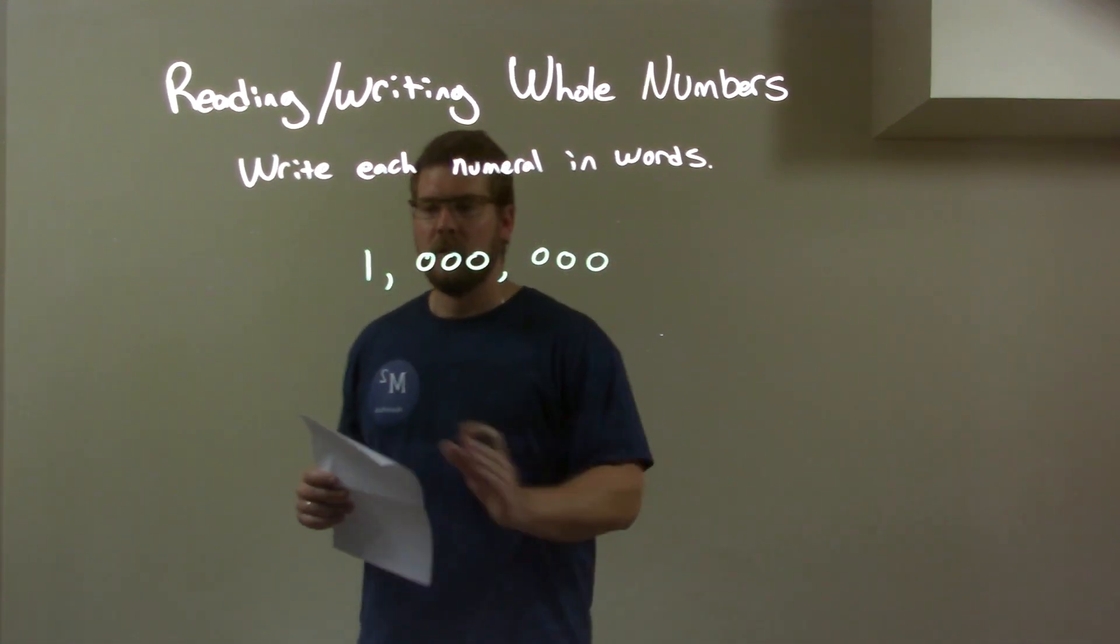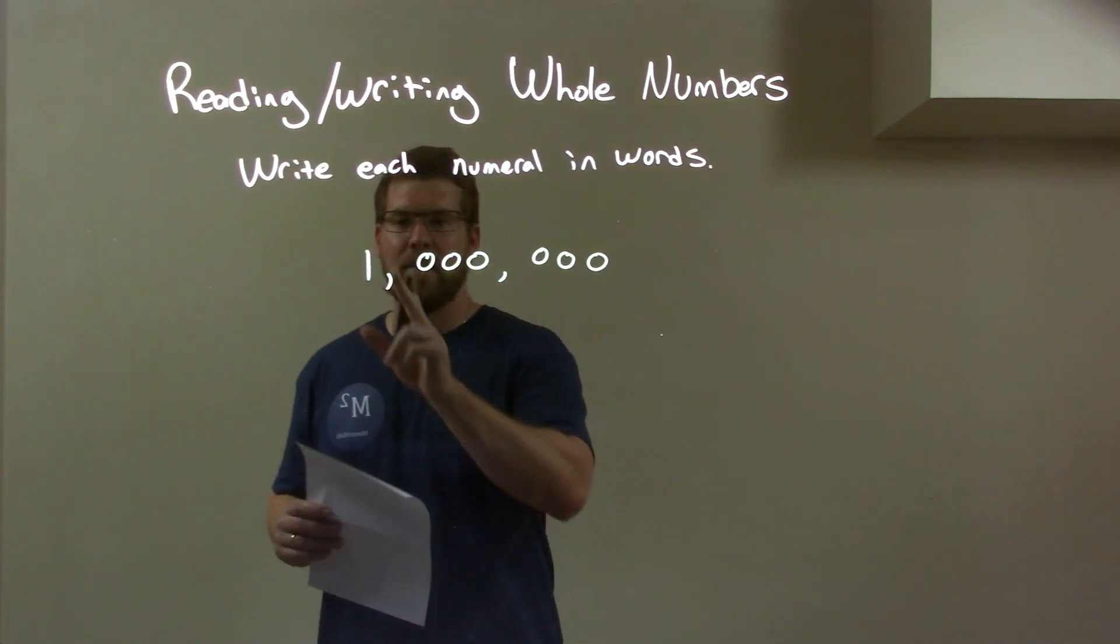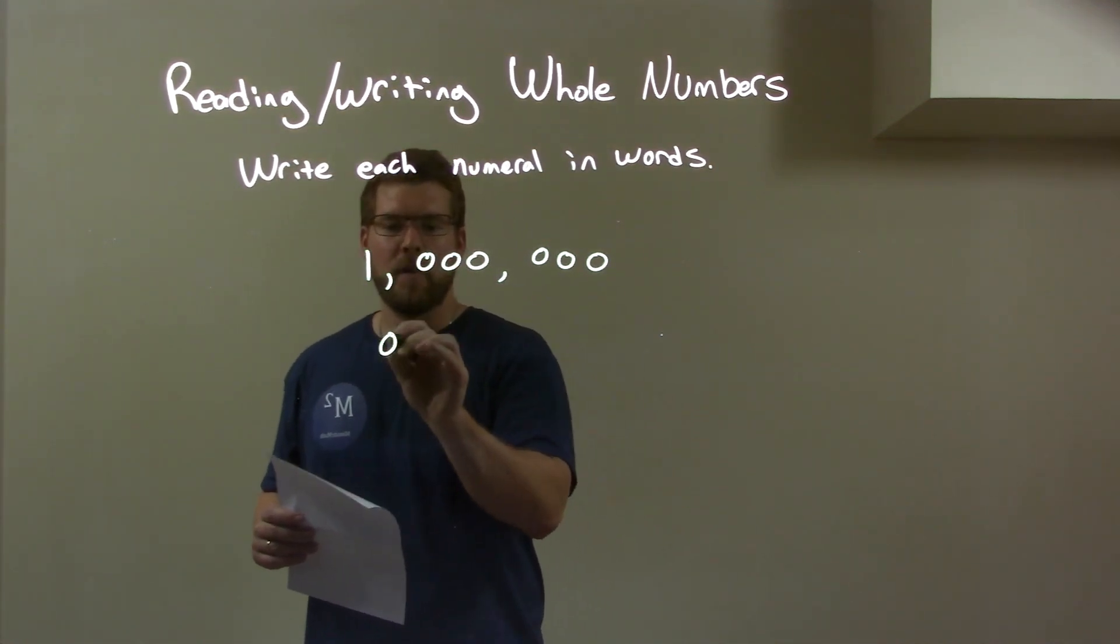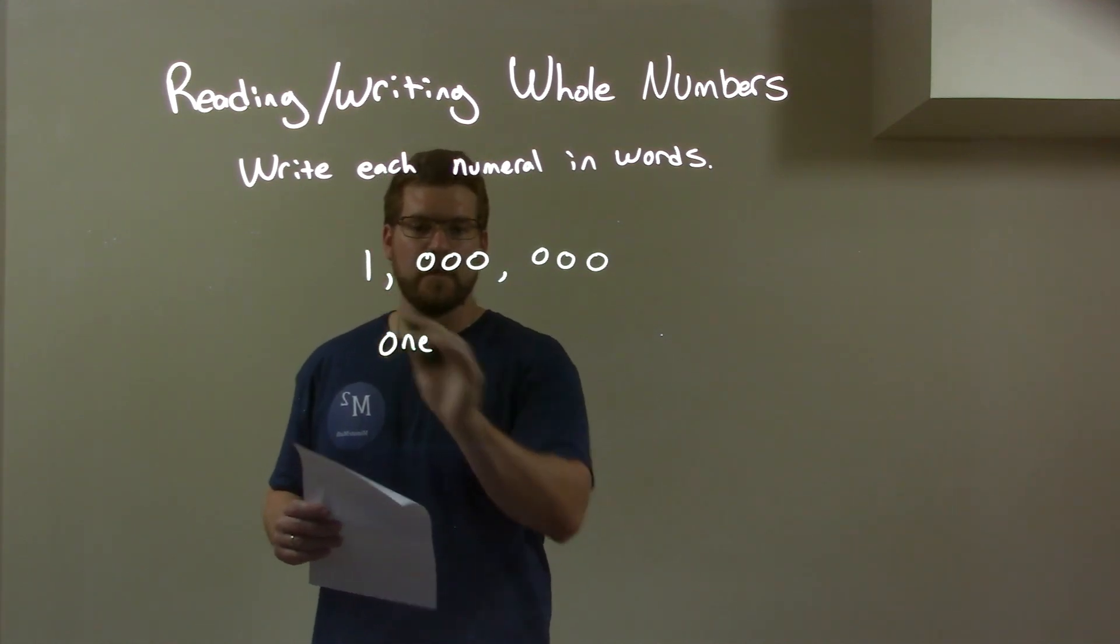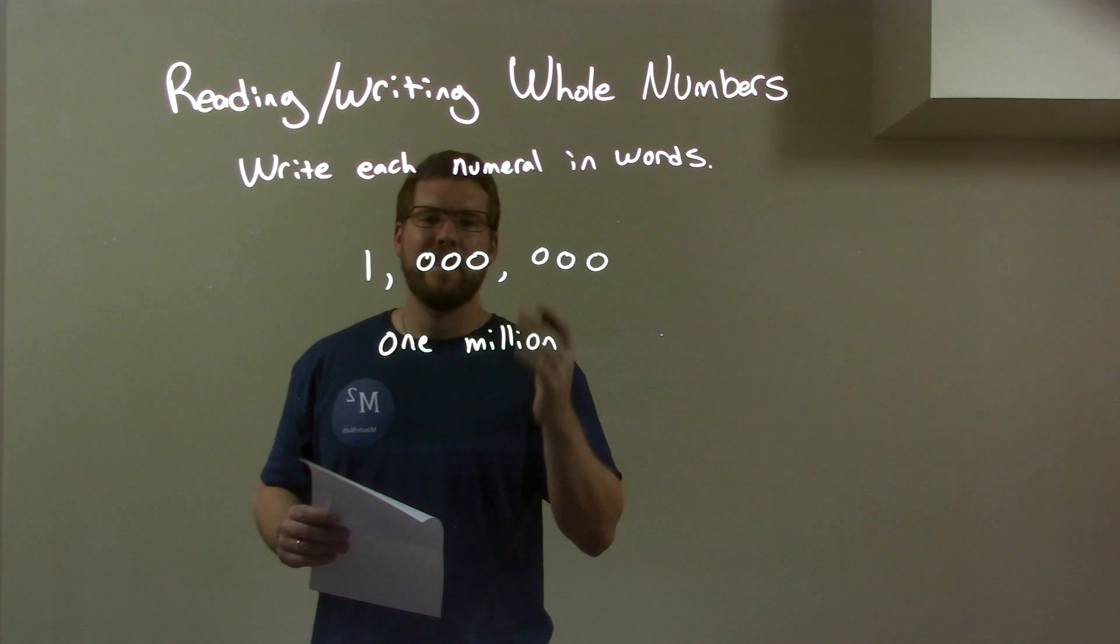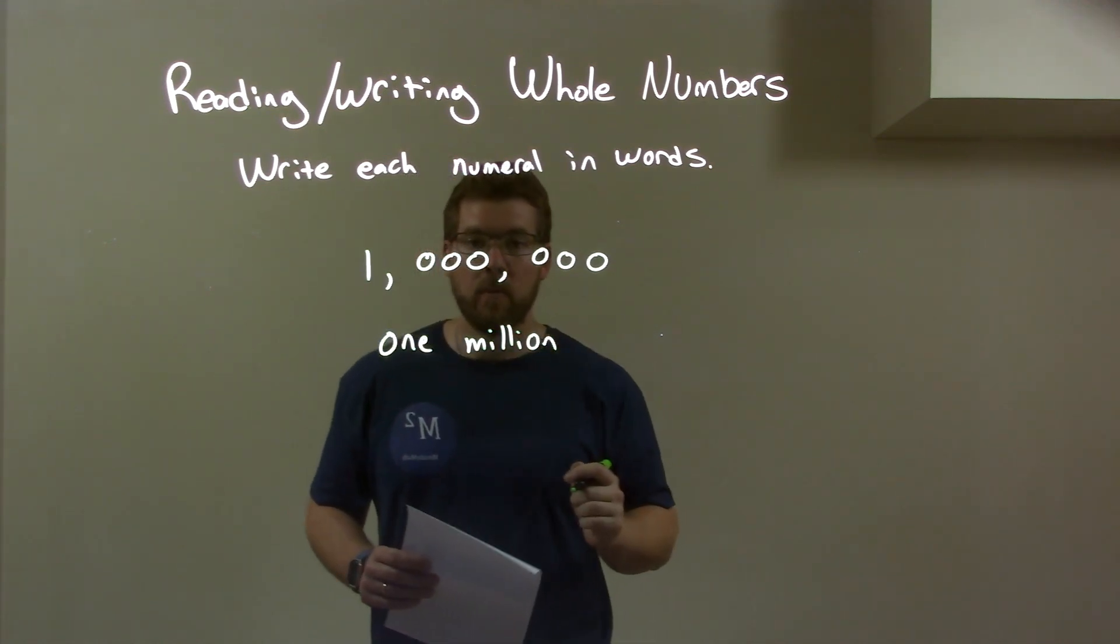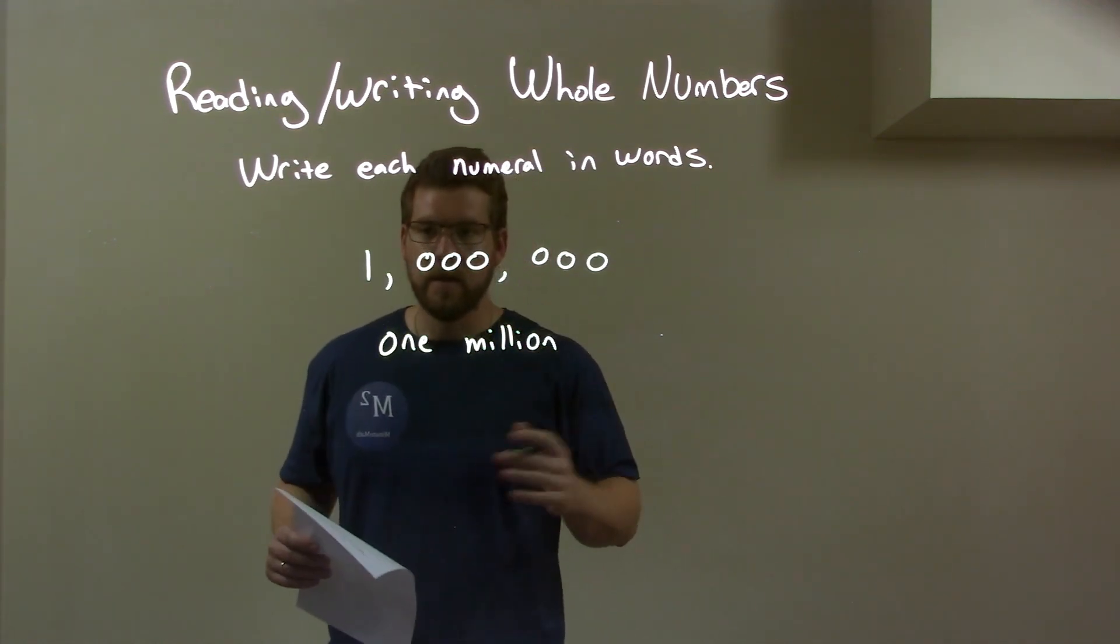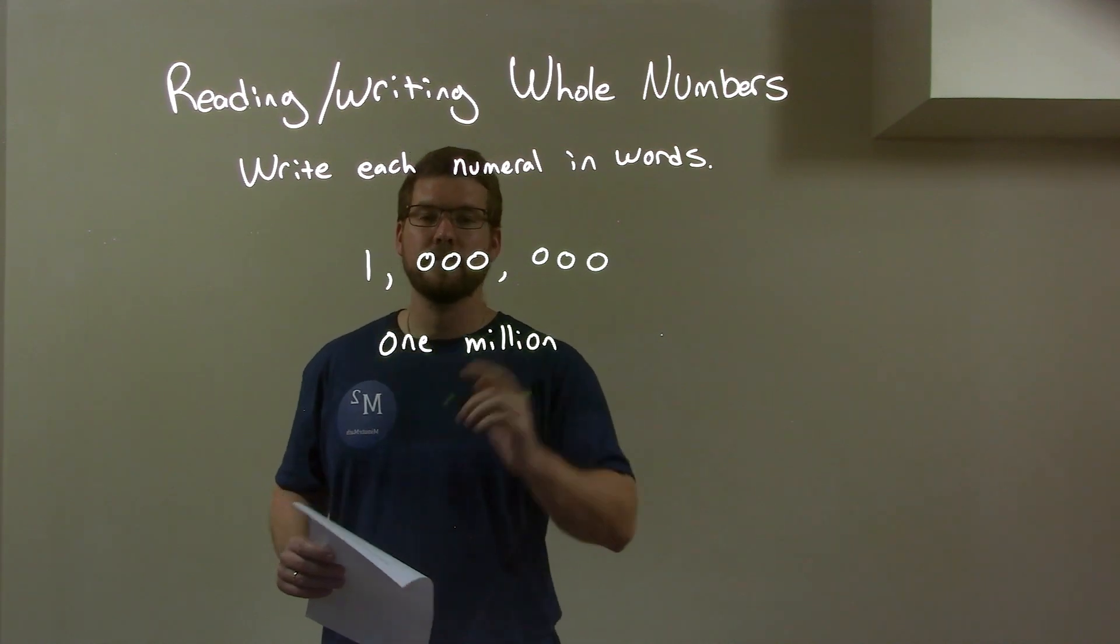Well, first thing I look, we have one right there and that's in the millions place. So we have one and then it's in the millions, so one million. Then we have zeros the rest of the way, where there's nothing else to write. So we actually have our answer: just one million.